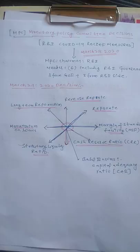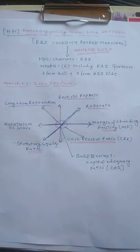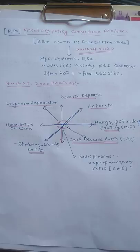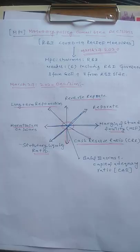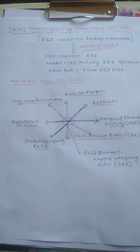They have taken decisions on changes in repo rate, reverse repo rate, and relaxation of marginal standing facility, reduction of cash reserve ratio, extension of time for implementation of capital adequacy ratio, moratorium on loans, and they introduced a new plan called long-term repo auction. Now let us discuss one by one.